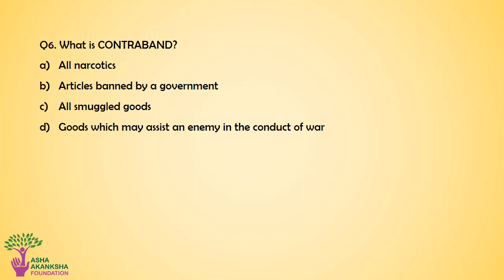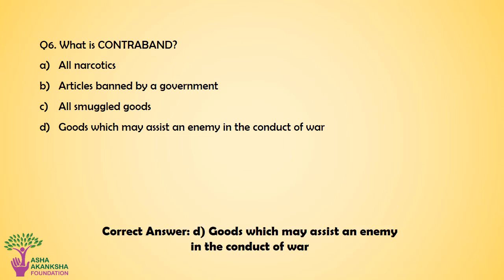Question number 6. What is a contraband? Option A: All narcotics. Option B: Articles banned by a government. Option C: All smuggled goods. Option D: Goods which may assist an enemy in the conduct of war. The correct answer for this question is Option D — Goods which may assist an enemy in the conduct of war.